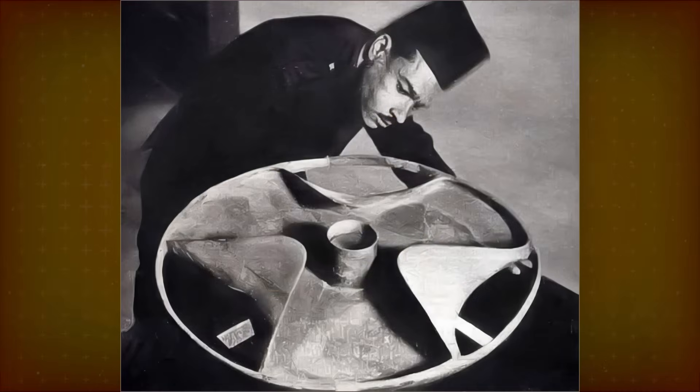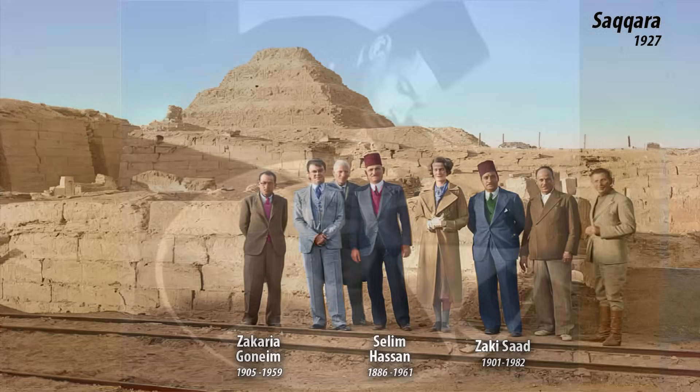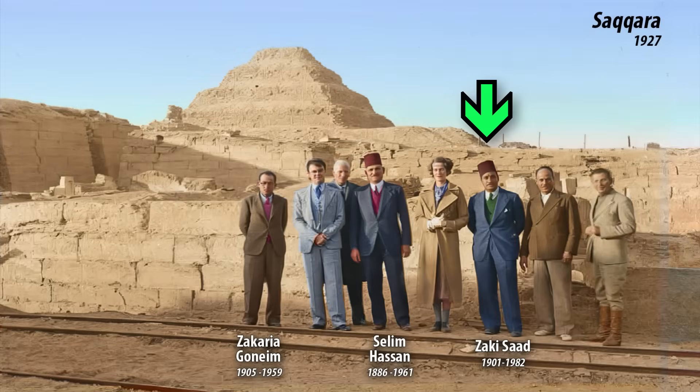By the way, this photo is often shown in this context, without explaining who this man is. This is Zaki Yusuf Saad, at that time the assistant to Walter Emery. Later on, he became an archaeologist in his own right.